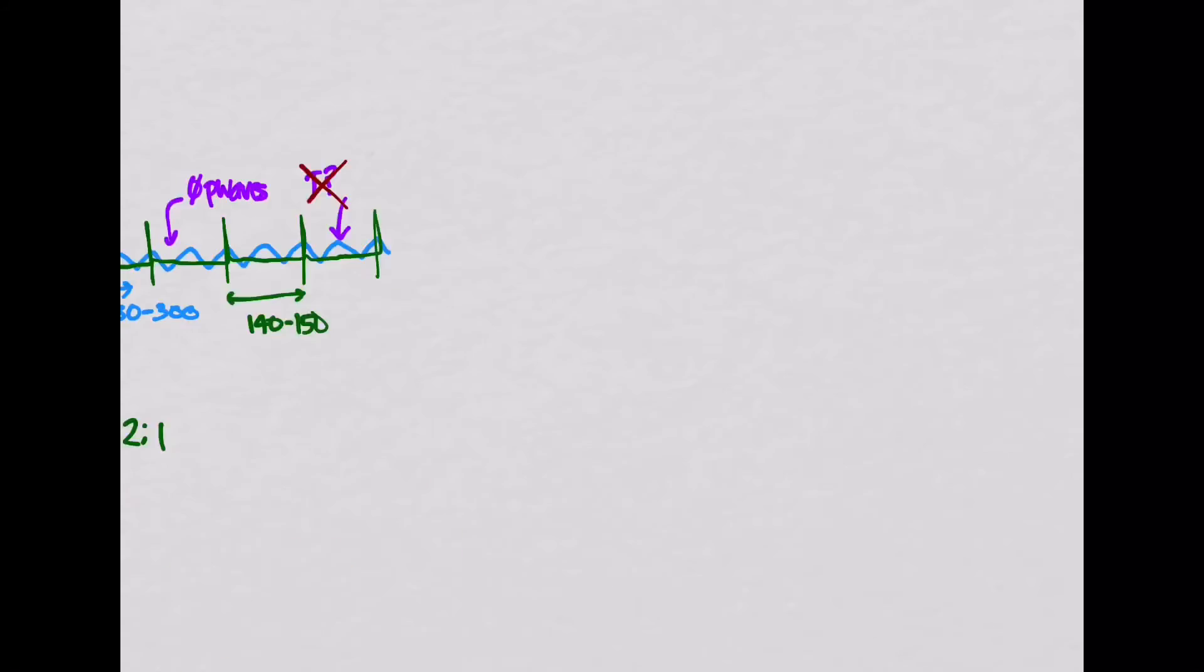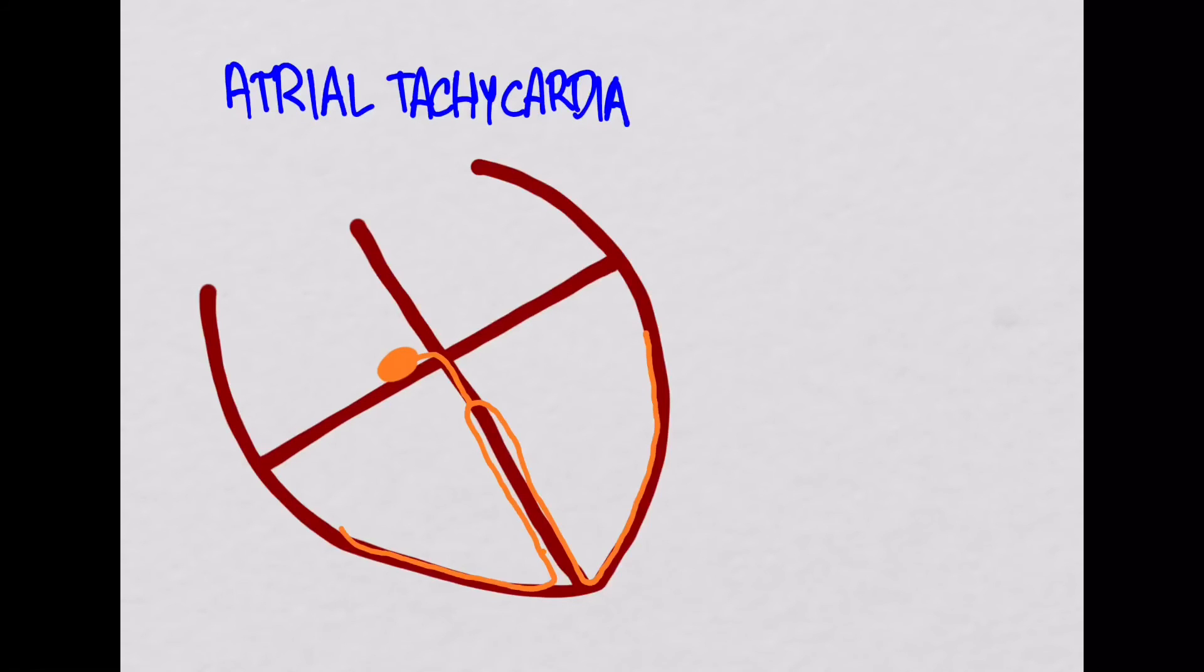The article also talks about atrial tachycardia, in which case there's some micro reentrance circle that's depolarizing the atria and then sending signals down through the His-Purkinje system. They mentioned that this tends to come in repetitive short bursts.